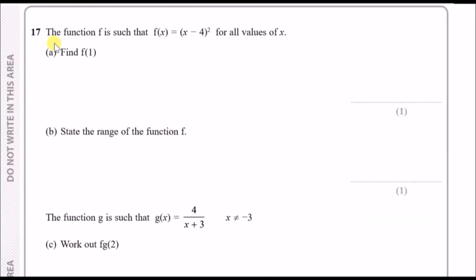Question 17. The function f is such that f(x) equals (x minus 4) squared. They want us to find f(1). In other words, replace the x value with 1. f(1) is literally going to be (1 minus 4) squared. Put this in a calculator and you'll get a straight answer of 9. That's it.